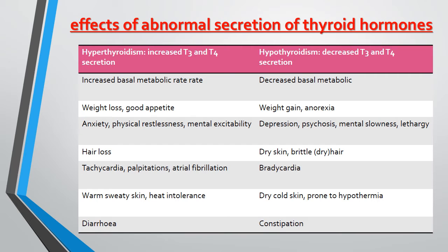In hyperthyroidism: warm, sweaty skin and heat intolerance. In hypothyroidism: dry, cold skin and prone to hypothermia. In hyperthyroidism, there will be chances of diarrhea due to increased metabolic rate. In hypothyroidism, there will be constipation due to decreased basal metabolic rate.